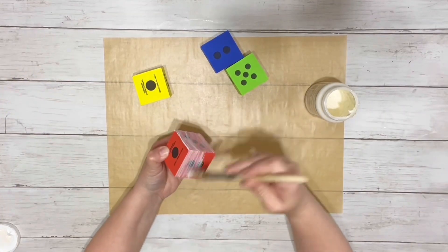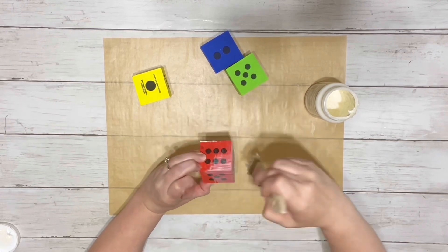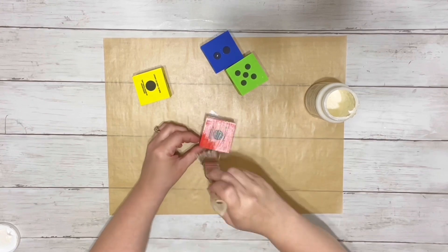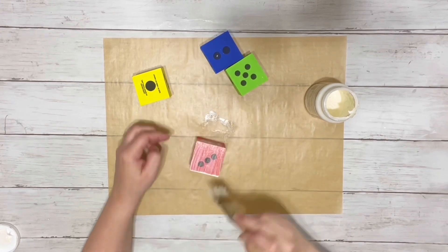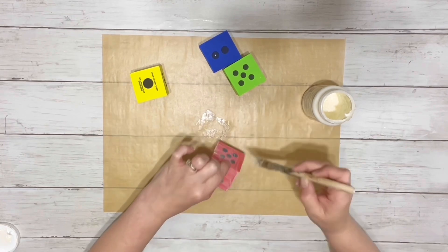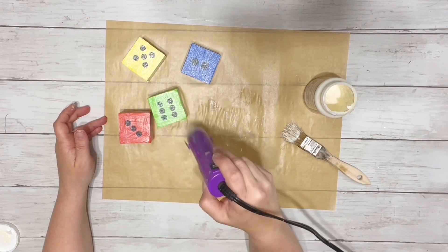The first thing I did was take the Mod Podge and cover all around each of the four dice. I did this so that the paint adheres better. I used my heating tool to speed up the drying process on those.